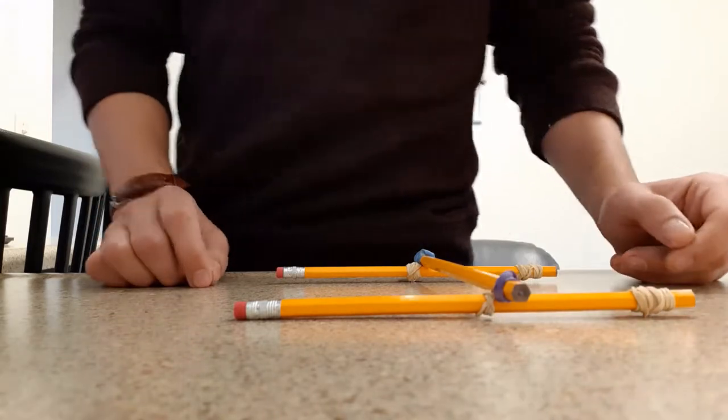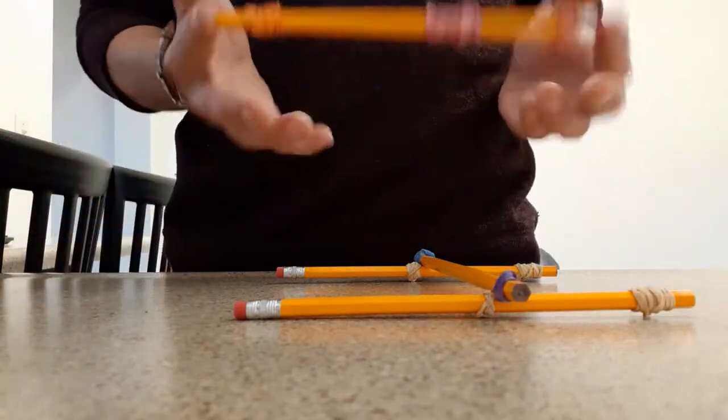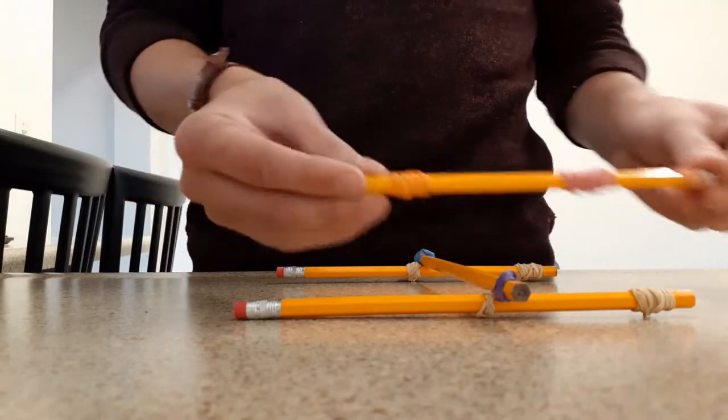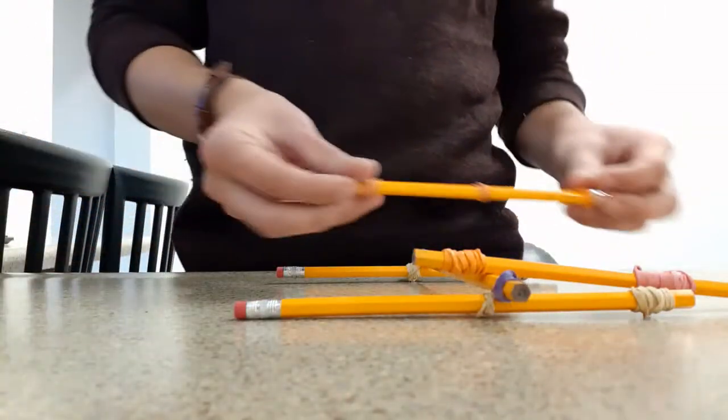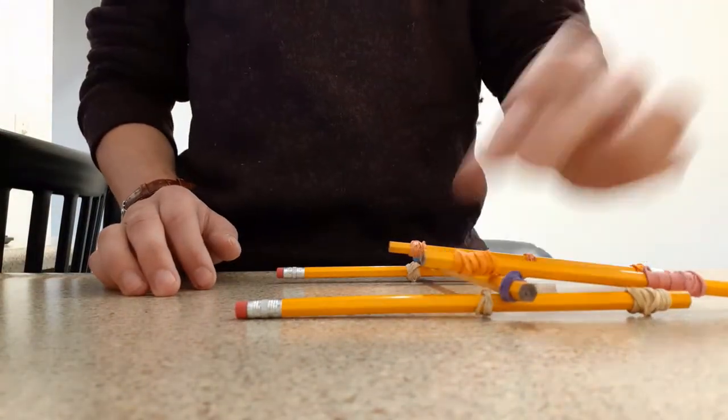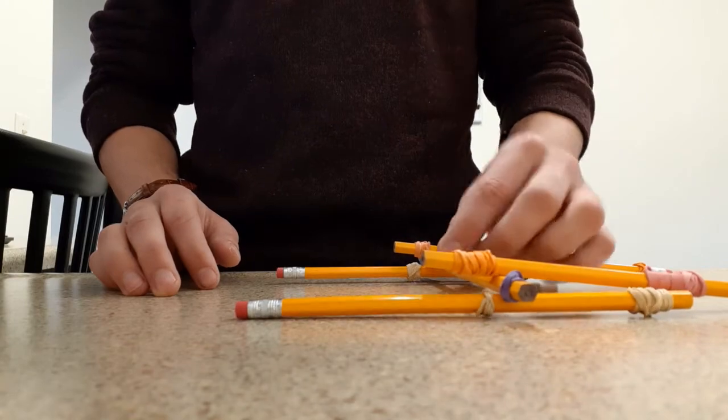Next, you're going to take two of these pencil rubber bands that have three rubber bands on them like so and simply place them over top like this so that you have this top rubber band at the top of this middle pencil.